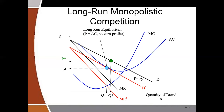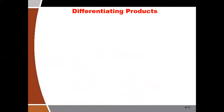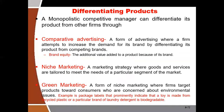The strength of a monopolistic competitor is the ability to differentiate each product from the others. How do they differentiate? The first method is comparative advertising. This is a form of advertising where the firm tries to increase demand for its brand by differentiating it from competing brands.